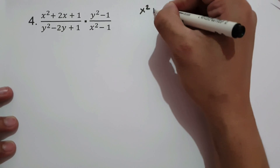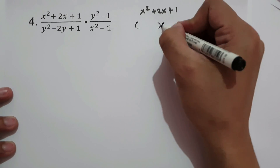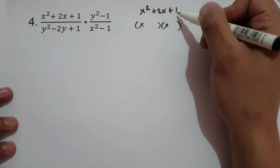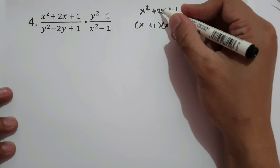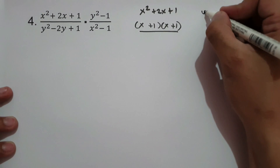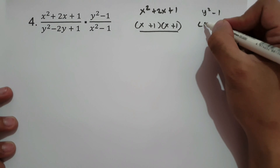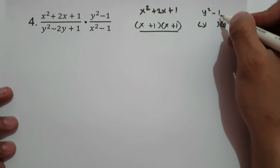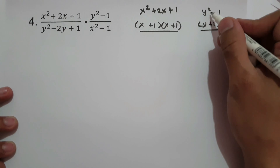For x² + 2x + 1: we need two numbers that add to +2 and multiply to +1, which is 1 and 1. So it factors as (x + 1)(x + 1). For y² − 1: that is a sum and difference, giving (y + 1)(y − 1). For y² − 2y + 1: we need two numbers that add to −2 and multiply to +1, which is −1 and −1. So it factors as (y − 1)(y − 1).